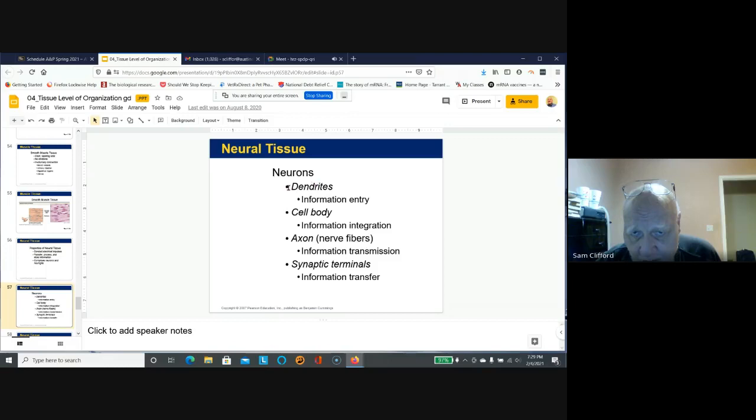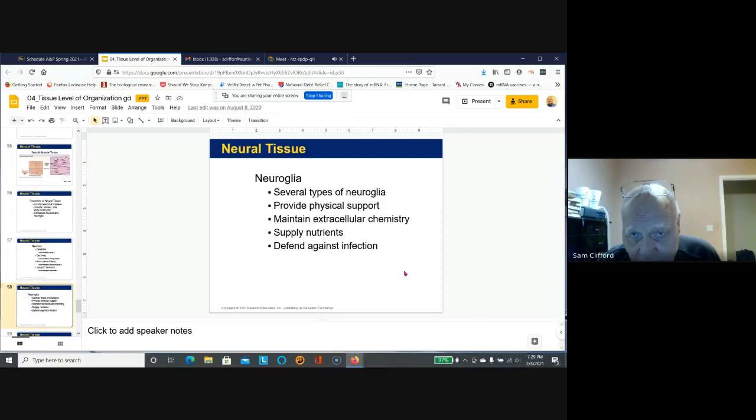So know what a dendrite is, cell body, axon, and synaptic terminals. So let's look at a picture of the nerve.